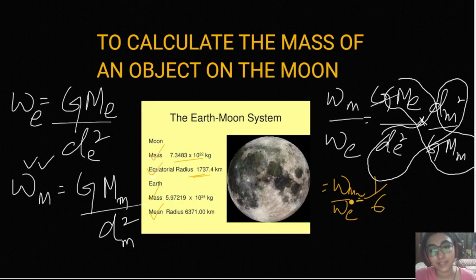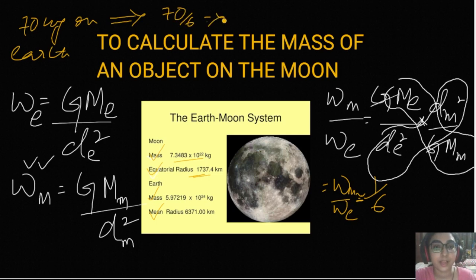So what does it mean? It means that anything's mass, or rather sorry, mass is constant everywhere, anything's weight that you find on the Earth will be one-sixth its weight on the moon. Or you can say that if a person's weight is 70 kgs on Earth, its weight will be 70 by 6, that is coming approximately as 11.6 kgs, that is one-sixth that of its weight on the Earth. So I hope this is clear, Wm by We is 1 by 6.